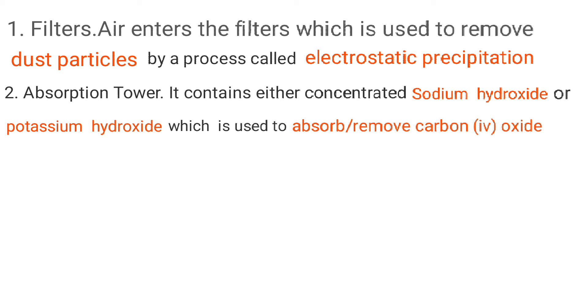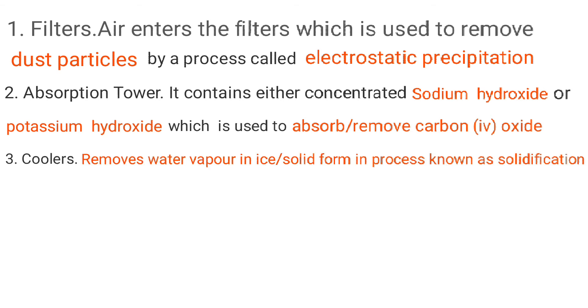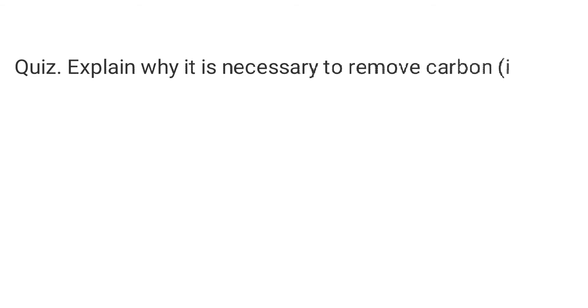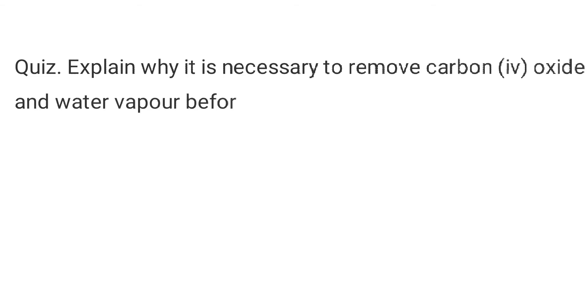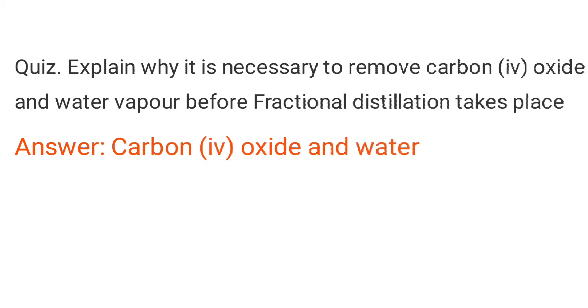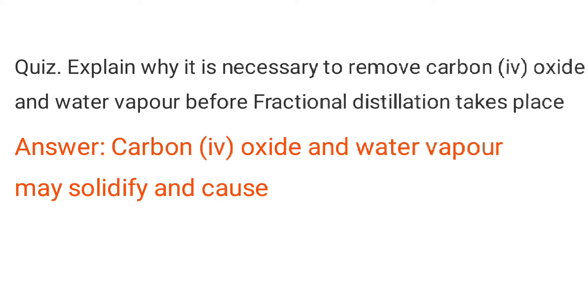Then from there, the remaining air is passed through the coolers. The cooler removes water vapor in solid or ice form because the temperature in the cooler is negative 25 degrees Celsius, which is below the melting point of water, which is zero. Now, why is it necessary to remove carbon dioxide and water vapor before fractional distillation takes place? Because the carbon dioxide and water vapor may solidify and cause blockage of pipes.